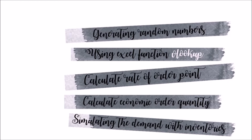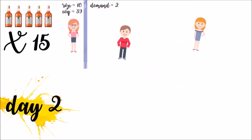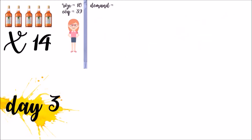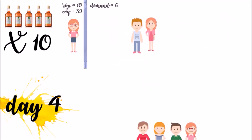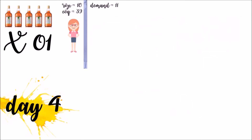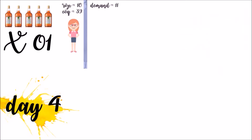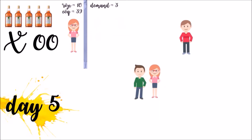Let's take a look at the inventory simulation for the demand of Imperador. The initial inventory is 16 bottles. For day 1, the simulated demand is 0. For day 2, the simulated demand is 2, so the initial inventory decreased by 2. This process continues during their daily operating hours. On day 4, the beginning inventory was 12 and the ending inventory was 1 bottle, according to the computed EOQ and ROP. This process continues during their daily operating hours.